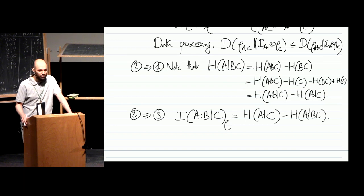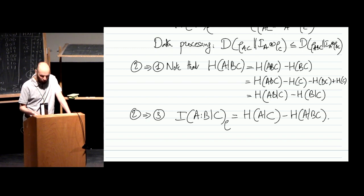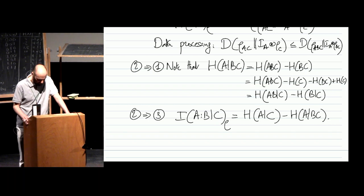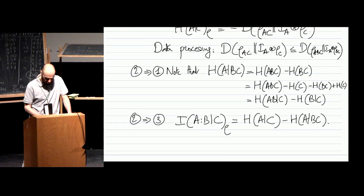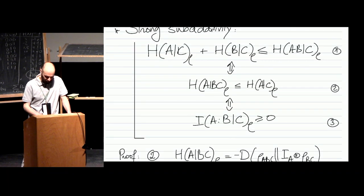To see that inequality 2 implies inequality 1, use the chain rule for von Neumann entropy: H(A|BC) = H(ABC) − H(BC). Adding and subtracting H(C), this gives H(AB|C) minus H(B|C). So the inequality H(A|C) ≥ H(A|BC) is exactly equivalent to H(A|C) + H(B|C) ≥ H(AB|C). The chain rule is quite useful — it allows you to decompose the entropy of a joint system AB as a sum of entropies of the parts. The conditional mutual information is defined as the difference of these entropies, so the equivalence with inequality 3 is obvious.